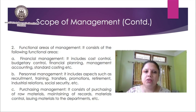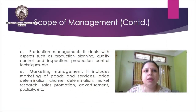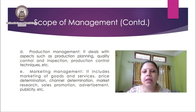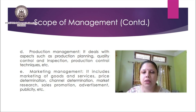Then comes purchasing management, which consists of purchasing raw materials, maintaining records, material control, and issuing materials for delivery. In any production unit, purchasing management is essential. Then comes production management, which deals with production planning, quality control and inspection, and production control techniques. In any production unit, checking product quality is vital — if quality is not good, customers will reject the product. Checking that the techniques used in the production unit are proper is also a key aspect of production management.